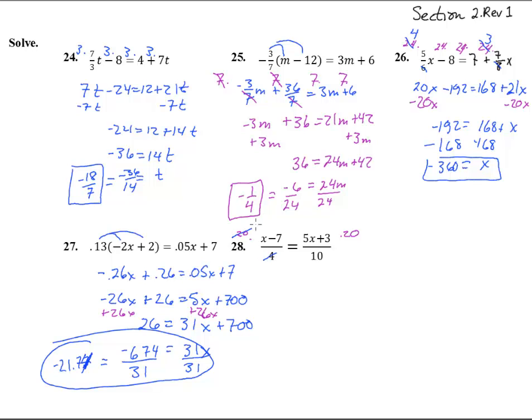Now watch what happens when we times both sides by 20. This 20 divided by 4 becomes a 5, so we're actually timesing this by 5 up here. 20 divided by 10, that gives us a 2. Look at that, that looks nice. Now when we distribute the 5, we have 5x minus 35 equals 10x plus 6.